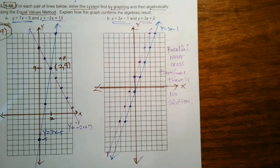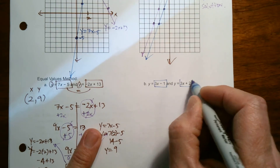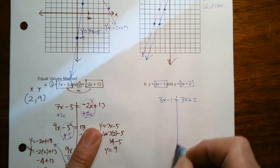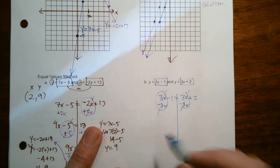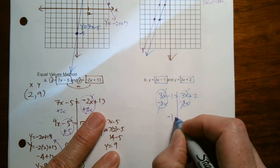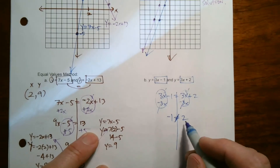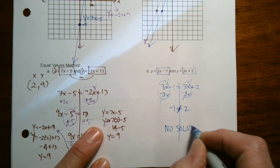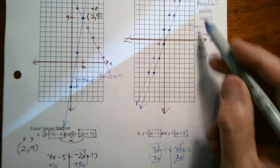What if you weren't graphing and wanted to solve this algebraically using the equal values method? We'd do the same thing — set those Y-expressions equal to find what X makes the Y's the same. But when I subtract 3x from both sides to isolate the variable, it disappears from both sides, and I'm left with negative 1 equals 2. Negative 1 doesn't equal 2, so we have an untrue statement — the algebraic result is also no solution. Either way — graphically or algebraically — there is no solution because the lines are parallel and never cross.